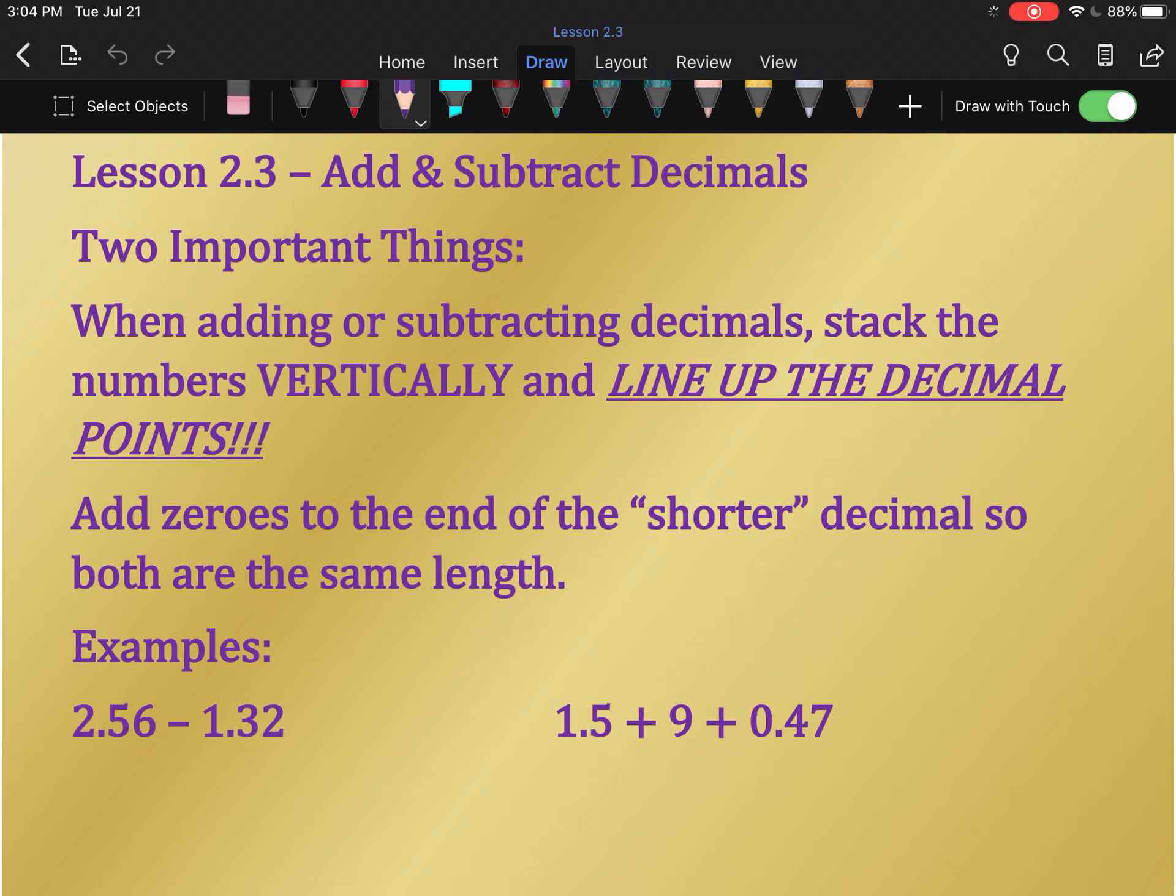When you add or subtract with decimals, we're going to write the numbers vertically and we're going to line them up by place value. So the decimal points will be above each other. The numbers in the ones position will be above each other. The numbers in the tenths positions will be above each other.